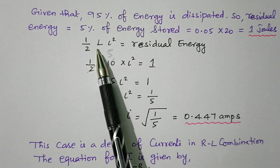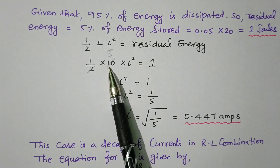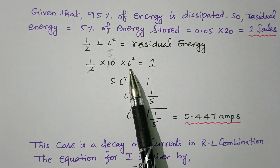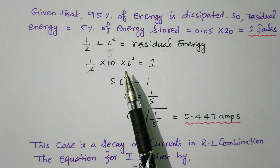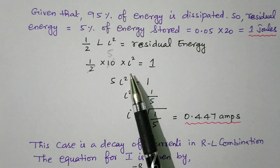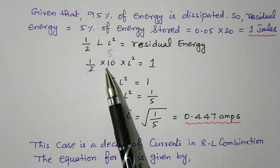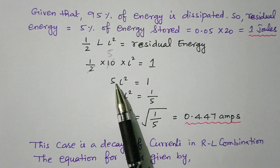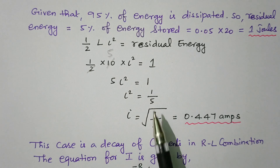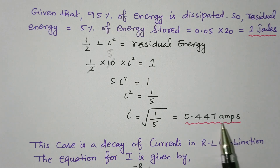From the residual energy, we can find the current. Setting half L I squared equal to 1 joule: half into 10 into I squared equals 1, so 5 I squared equals 1, I squared equals 1 divided by 5, and I equals the square root of 0.2, which is 0.447 amperes. We need to find the time taken to reach this current level, corresponding to 95% energy dissipation.